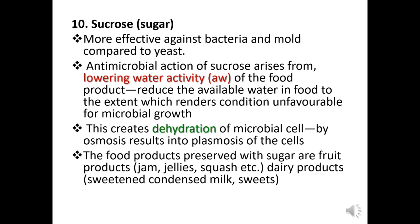Next, sugar or sucrose. Sugar is more effective against bacteria and molds compared to yeast. Its action is similar to that of salt, as it lowers the water activity of the food product, reducing the available water to render conditions unfavorable for microbial growth. This creates dehydration of microbial cells by osmosis, resulting in plasmolysis of the cells. Food products preserved with sugar include fruit products such as jam, jellies, and squash, as well as dairy products like sweetened condensed milk.